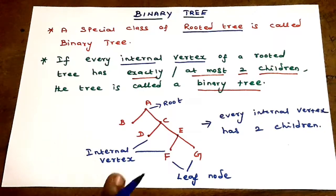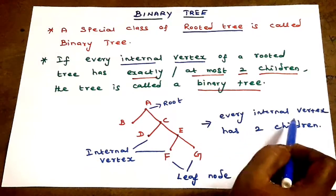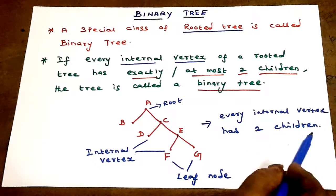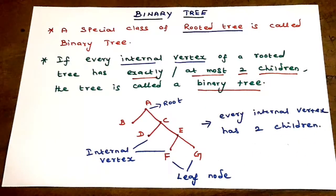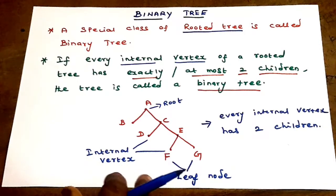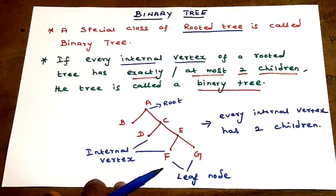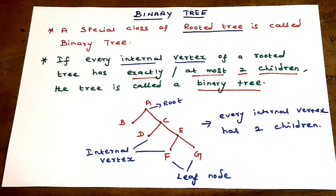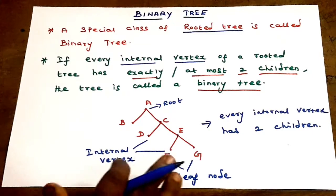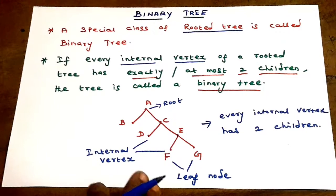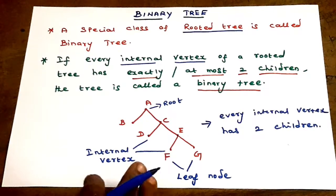A binary tree is a rooted tree in which every internal vertex has exactly or at most two children. This definition is very important for exams like UGC NET and Tamil Nadu SET, where the binary tree definition — a rooted ordered tree with at most two children per internal vertex — is repeatedly asked.